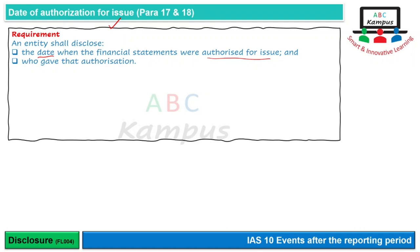And who gave that authorization? For example, financial statements authorized हुई 28 September 2021 को और authorization दी board of directors ने। उन्होंने approve किया और जो sign किये वो chief executive और one director ने.